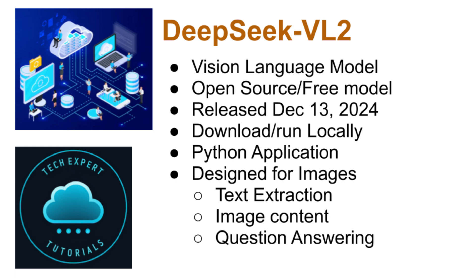DeepSeek VL2 is a cutting-edge vision language model that goes beyond simple text extraction. You can also understand the meaning of text within images, answer questions about the visual scene, and even infer the overall theme. There is an open-source version that you can download and use in your own applications.